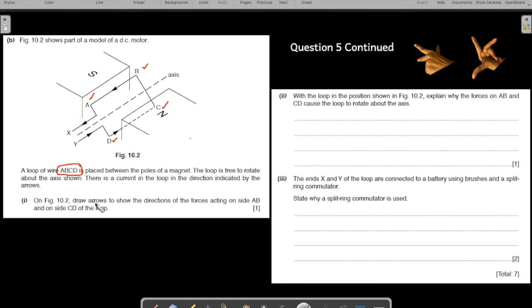On this figure draw arrows to show the direction of the forces acting on the side AB and on the side CD of the loop. So, how do you find the direction of the arrows? What fundamental do you use here? You use the Fleming's left hand rule. Fleming's left hand rule. So, let us use the Fleming's left hand. All of you take out your left hand.